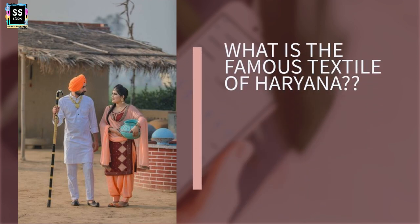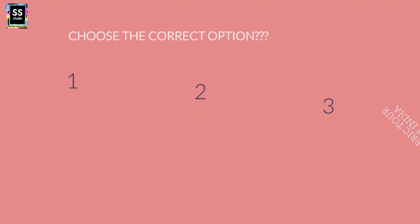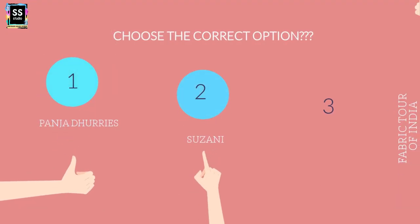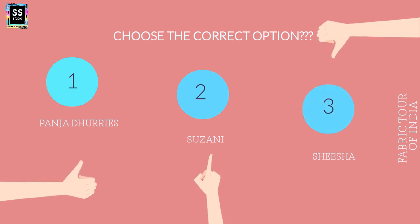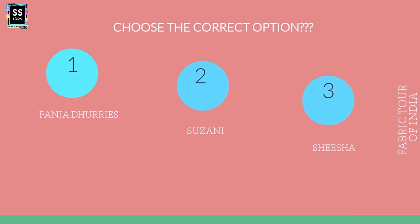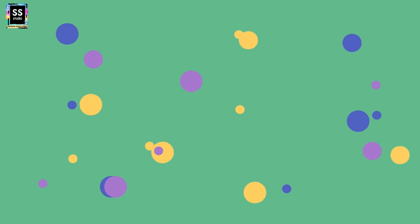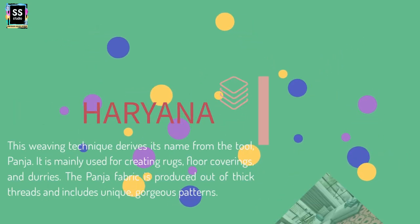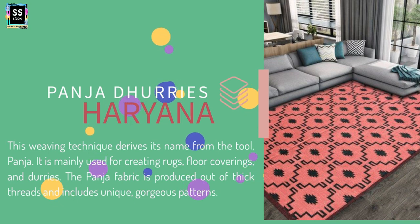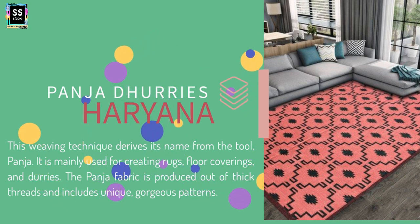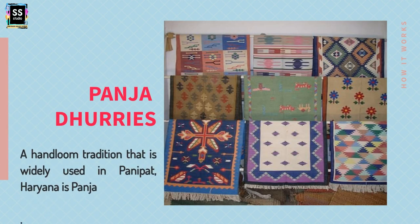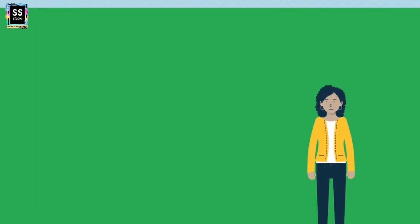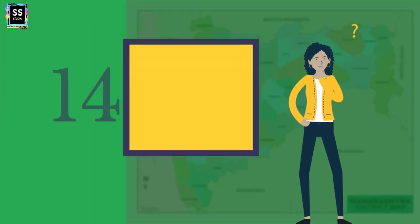State 13: Which is the famous textile of Haryana? The options are: Is it Panja Dhurries? Is it Suzani? Or is it Shisha? You must be aware of the home furnishing sector of Haryana — it is definitely Panja Dhurries. The weaving technique derives its name from the tool Panja, mainly used for creating rugs. It is widely used in Panipat, Haryana, which also has a handloom tradition called Panja.